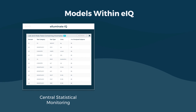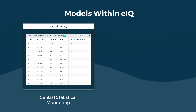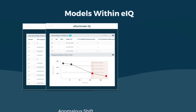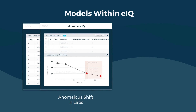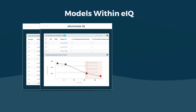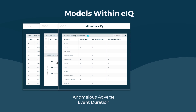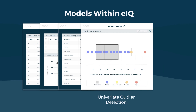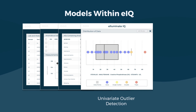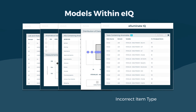Central statistical monitoring, which detects patient-level anomalies from clinical trial data. Anomalous shift in labs to predict data discrepancies that have an atypical shift in lab values. Anomalous adverse event duration to predict if reported AEs have an anomalous duration. Univariant outlier detection. And incorrect item type to identify atypical values and incorrect item types across several domains.